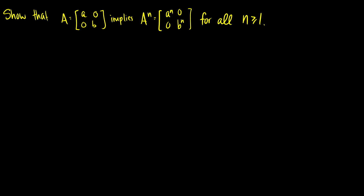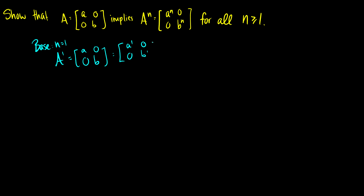Linear algebra time. We have a matrix A with entries a and b on its diagonals and zero everywhere else. We want to show A^n has a^n and b^n on the diagonals and zero everywhere else. For the base case, n = 1: A^1 is just the matrix [a, 0; 0, b], which equals [a^1, 0; 0, b^1]. Base case confirmed.